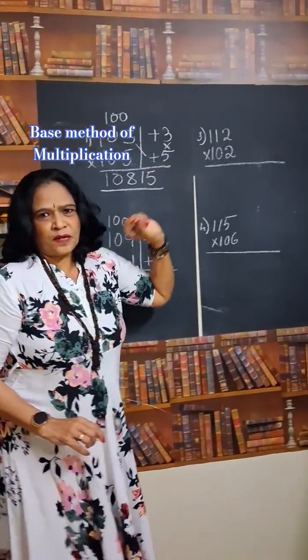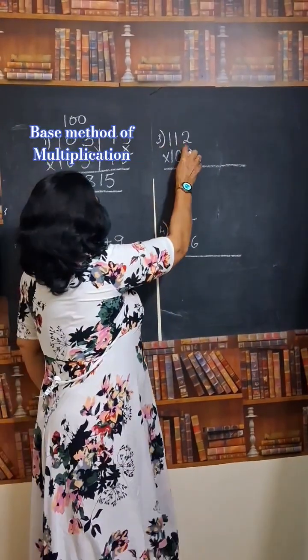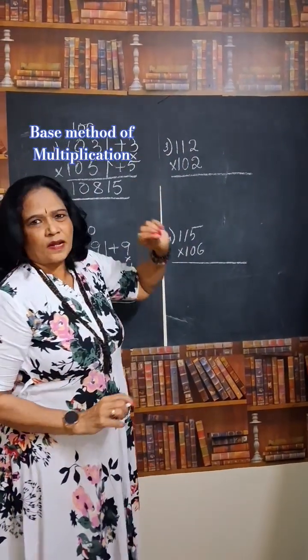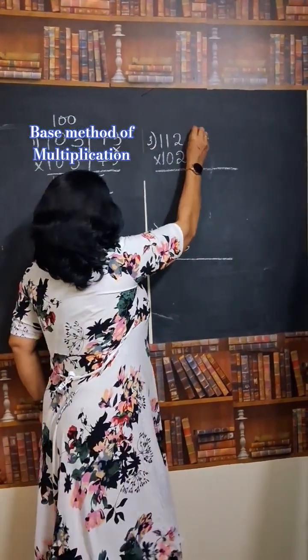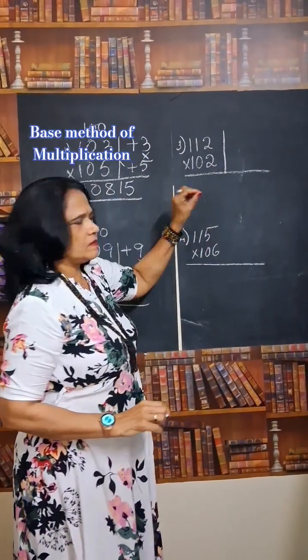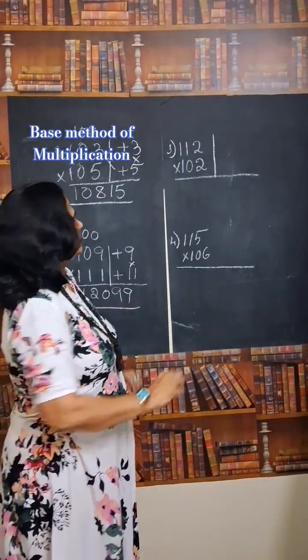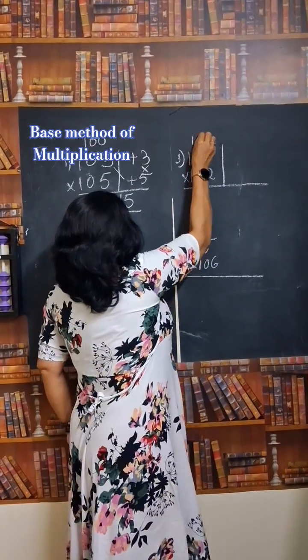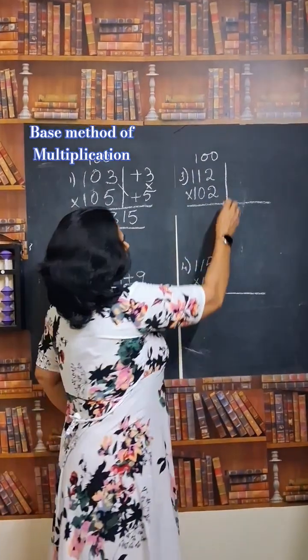Can we see one more example? 112 into 102. See how fast we can do this. Just in seconds we are able to do this. First write the base of the number. Then subtract with the base. That will be 12.